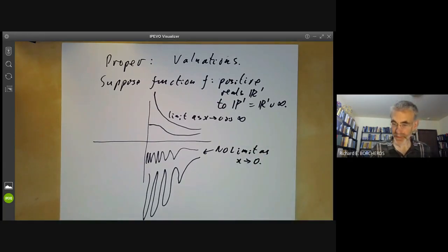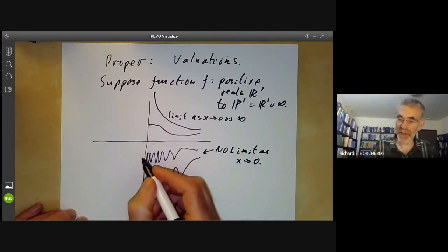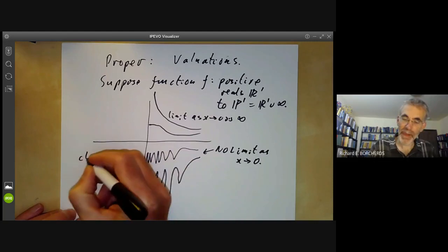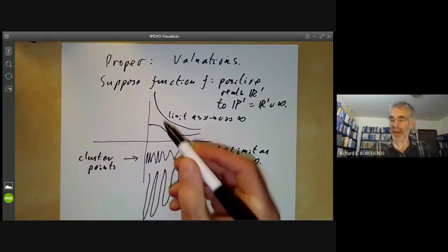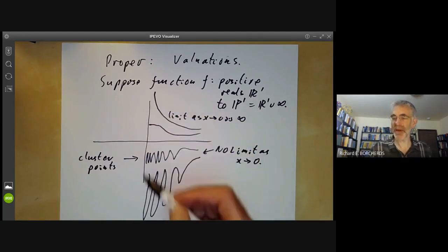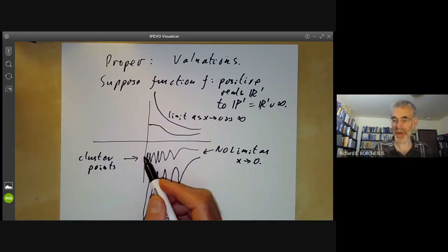However, it always has cluster points. And this is due to the fact that the projective line is compact, so it must approach a point infinitely often.